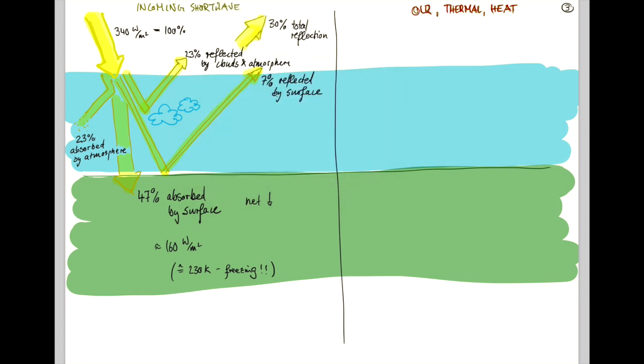At the top of the atmosphere, we find that Earth emits about 70% of the incoming solar energy, which is about 240 watts per meter squared, which corresponds to a temperature of 255 Kelvin.